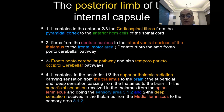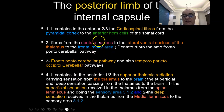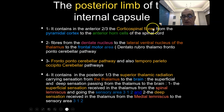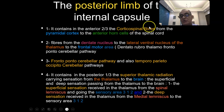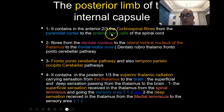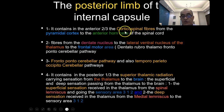Now we pass to the posterior limb of the internal capsule. The anterior two-thirds contain the corticospinal fibers. As you know, if you have an infarction or hemorrhage in the internal capsule you get contralateral weakness, because there is injury of the corticospinal fibers passing in the anterior two-thirds of the posterior limb. These are the pyramidal fibers going from the motor area — area 8 — down to the anterior horn cells of the spinal cord.